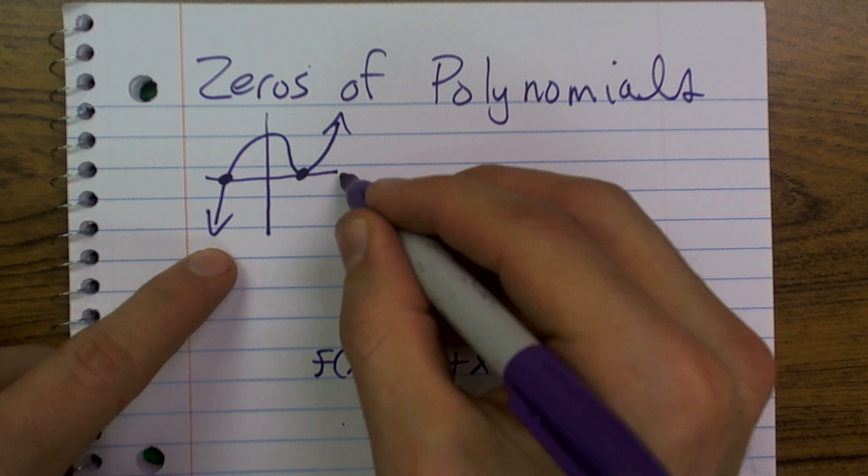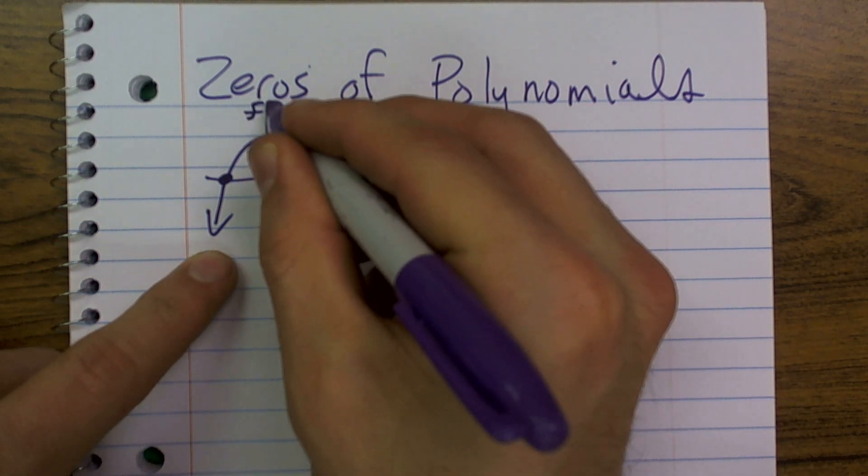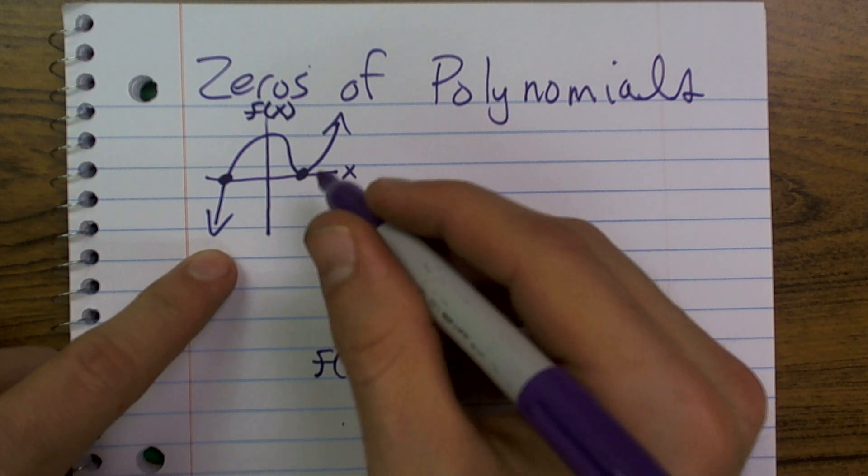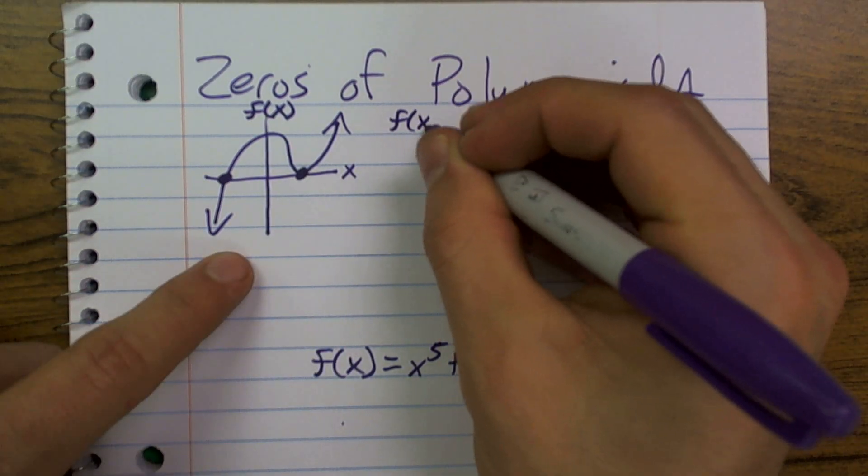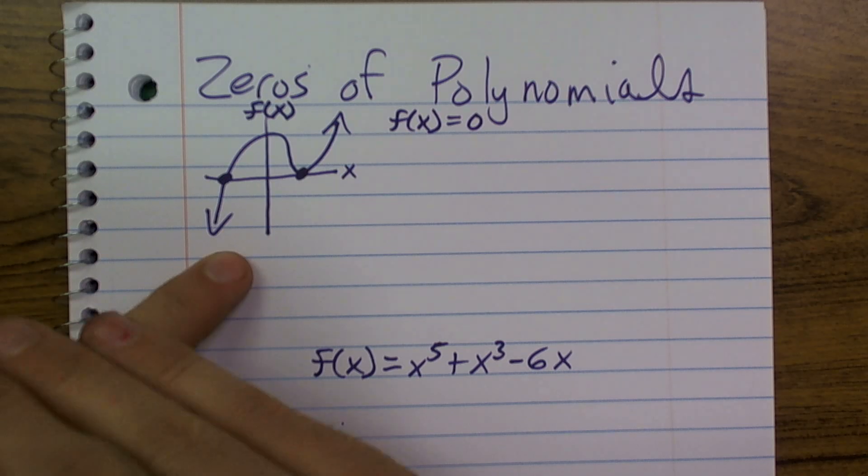And essentially, if we look at this and we say here's our x-axis and here's our f of x or our y-axis, remember that's your input and that's your output, the zeros of our polynomial are going to be when f of x is equal to zero.